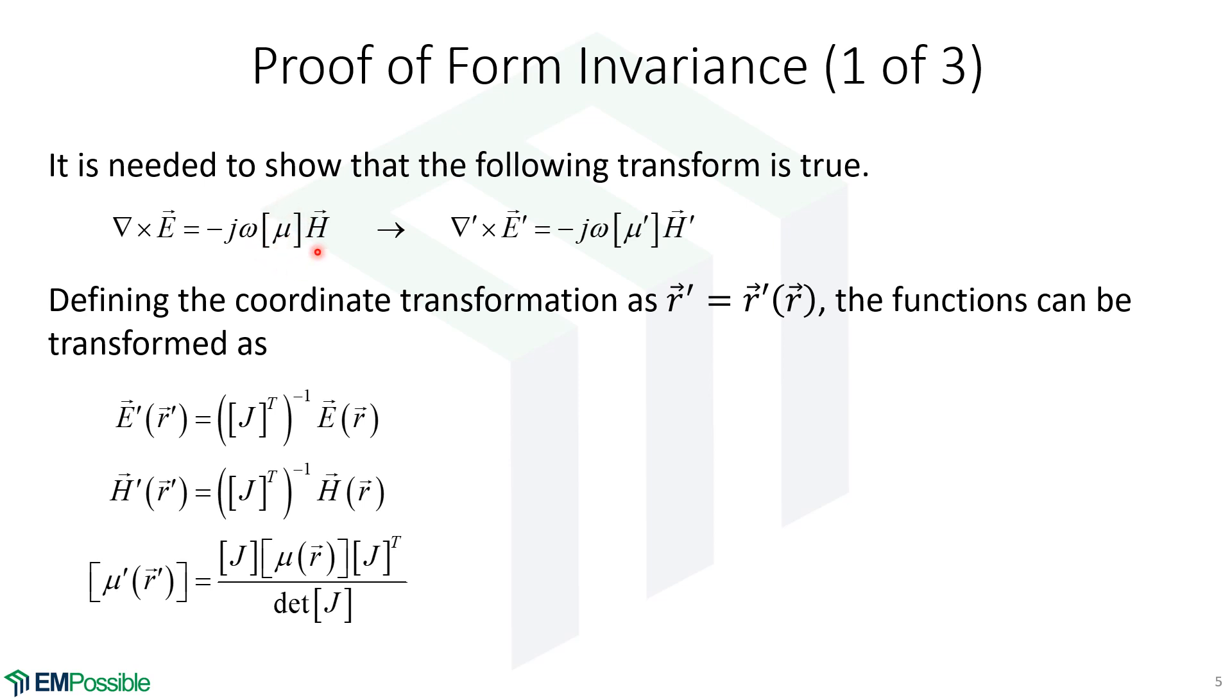And then we're looking here at the permeability as an operation. It's an operation happening onto the magnetic field. So this is not a function. It's an operation in the context of that equation. And so it is transformed using our Jacobian this way. And we get the permeability tensor in our transformed coordinate system.